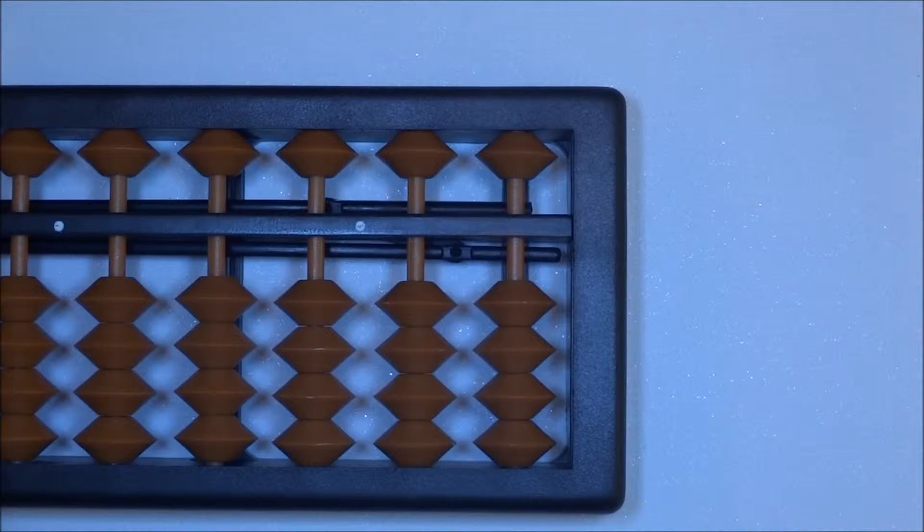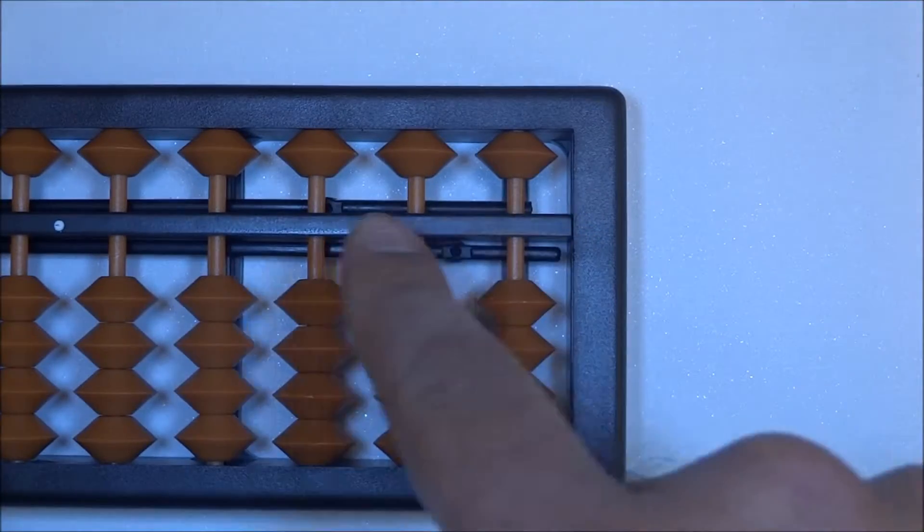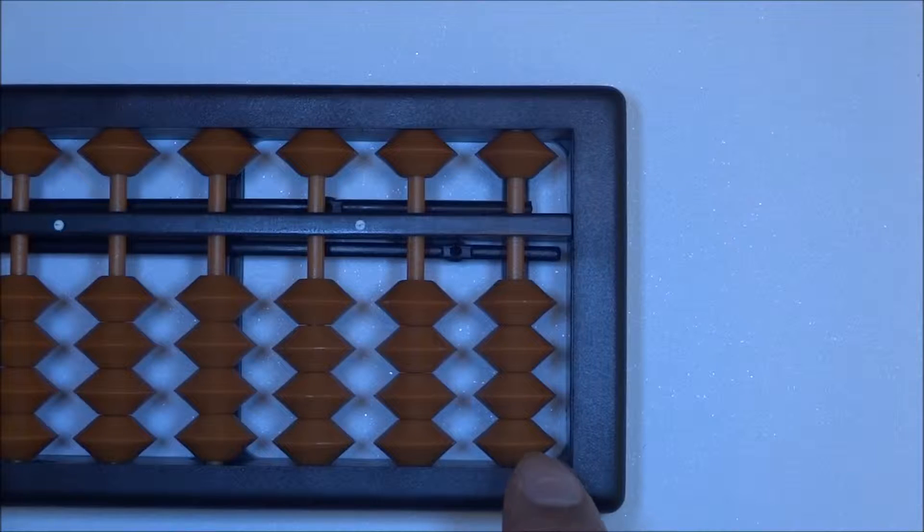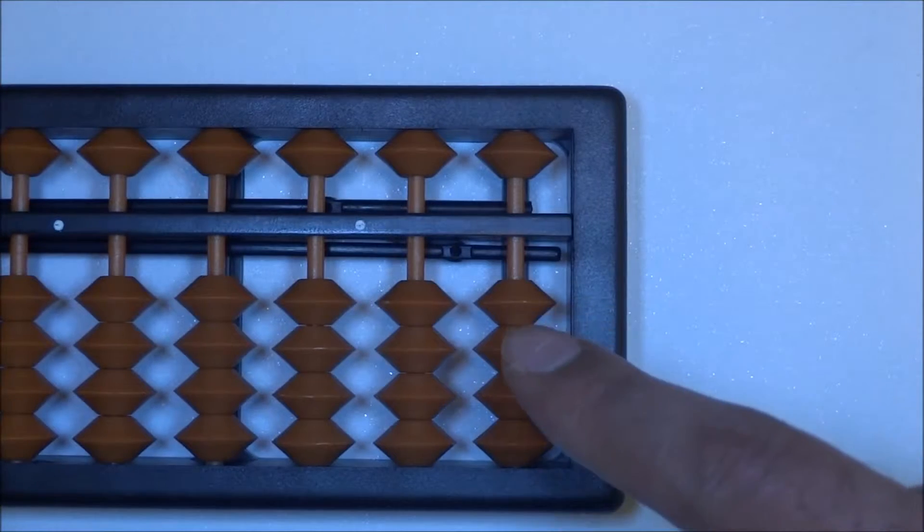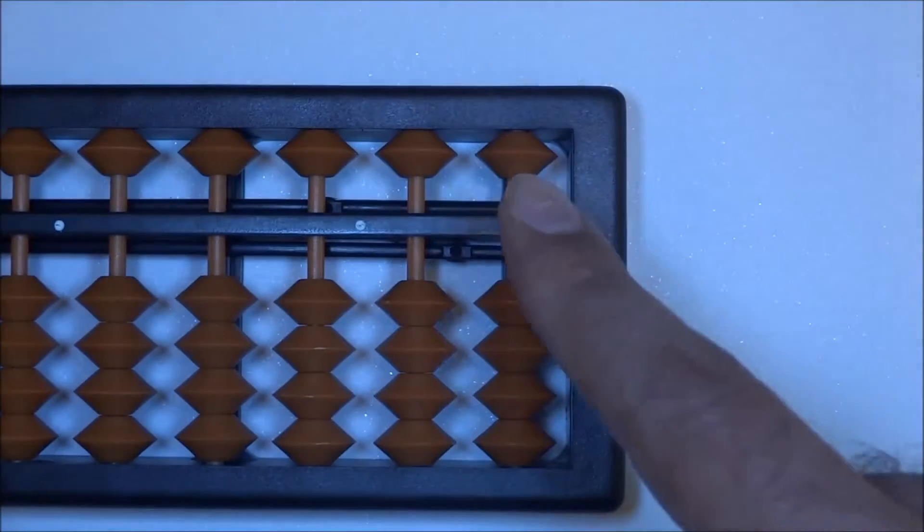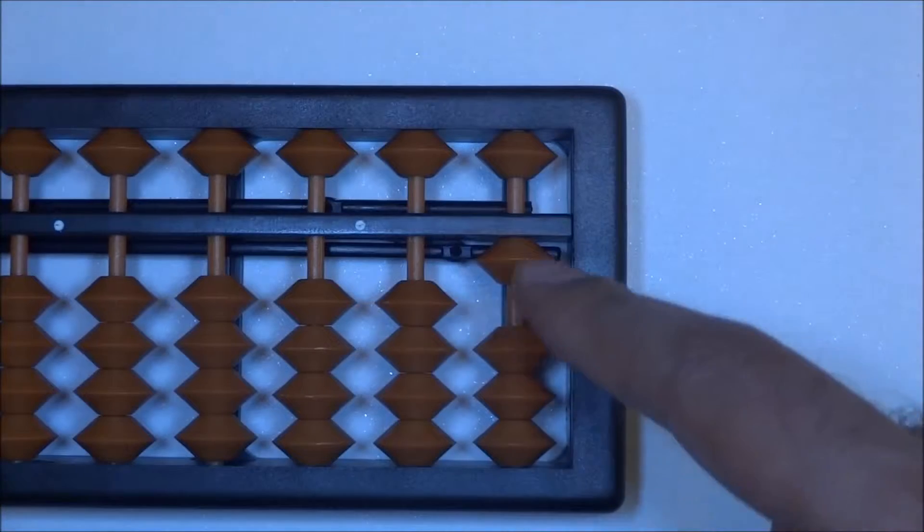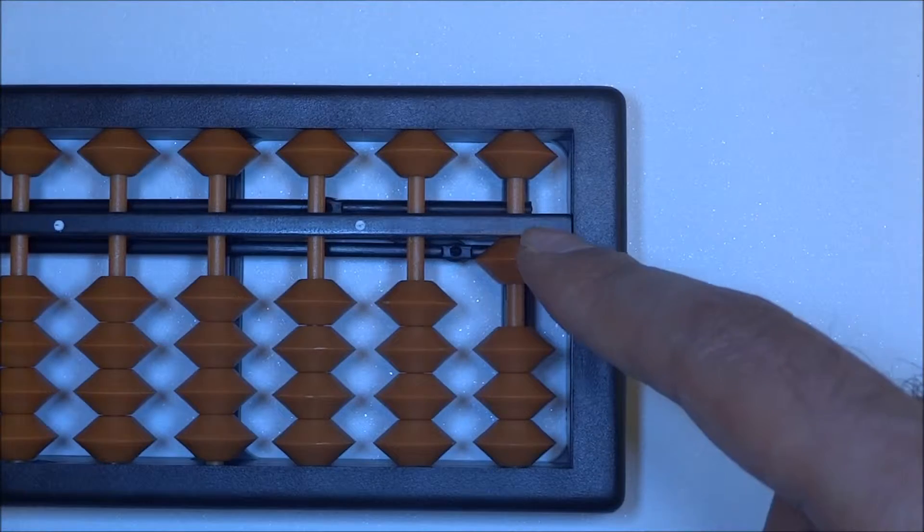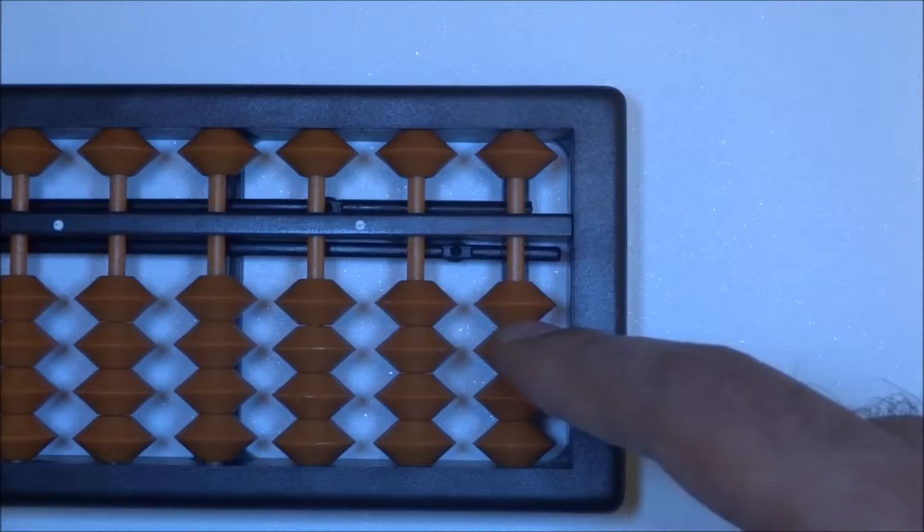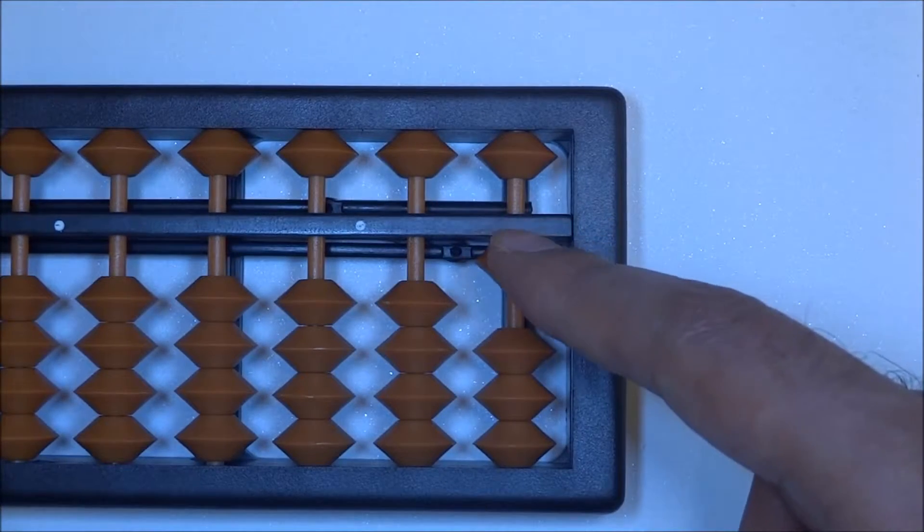Some of the basics again of moving the beads: as you can see here's the beam and we're going to have this column, the right most column, as the units. Now when we move the beads up or down, here we have one and we move it up. Anytime we take a bead towards the beam we call it up. So once again, up one would be here we go, we have one, up two. Let's reset it back.